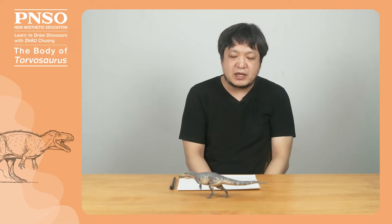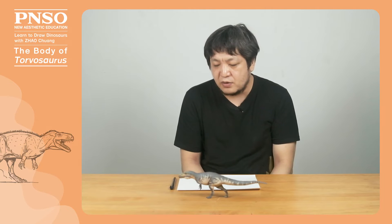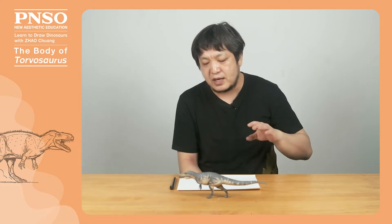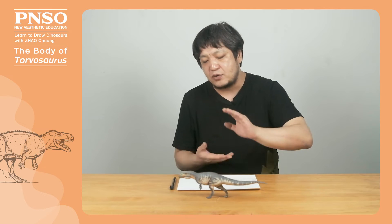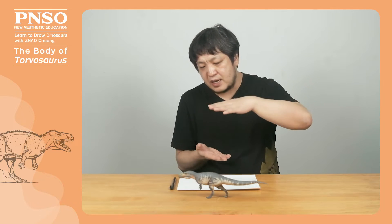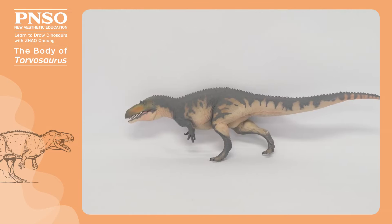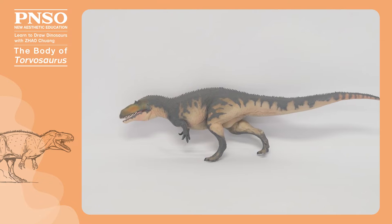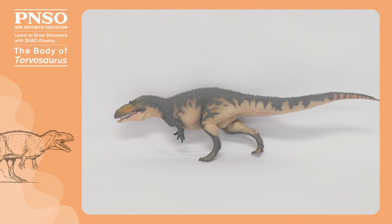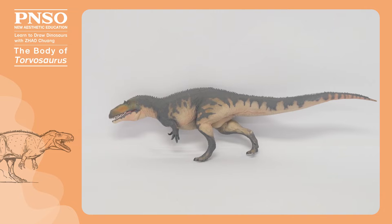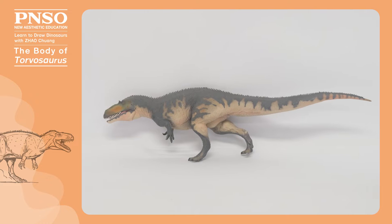Before drawing the whole body of the Torvosaurus, we must understand its body shape. It looked similar to the Allosaurus. However, there's a big difference in body shape from typical carnivorous dinosaurs such as the Allosaurus, that is, its legs didn't seem to be very long, and its body looked as if it was flattened or stretched. Its body was not as rotund as many dinosaurs. It was relatively thin, because it had a narrow pelvis, which made it look more slender.